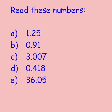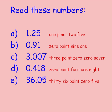When you're ready, press play. You should say 1.25, 0.91, 3.007, 0.418 and 36.05.